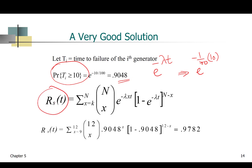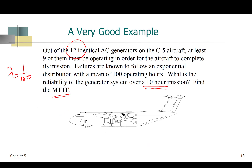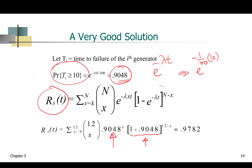The system reliability is computed using the summation equation, plugging in 0.905 as the component reliability and 1 minus 0.905 as the failure probability. With k equal to 9 and n equal to 12, since we have 12 identical AC generators and 9 must be operating, we get a system reliability of 0.9782.